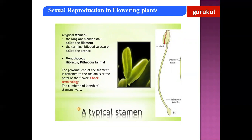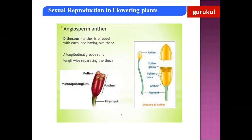The male sex organ in the flower is the androecium. The units of androecium are called stamens. A stamen is a long slender stalk which has a filament and an anther. The anther is connected to the filament with the help of a connective. The proximal end of the filament is attached to the thalamus. The length of the filament varies in different flowers.